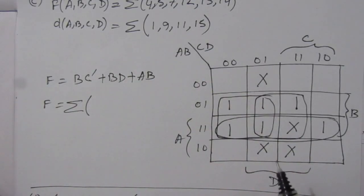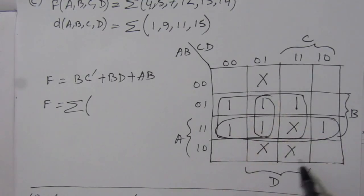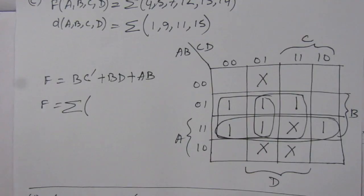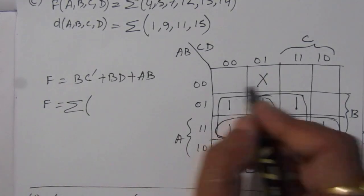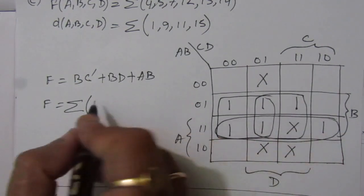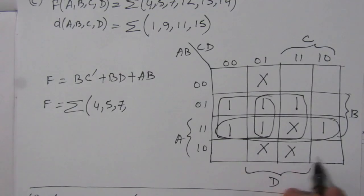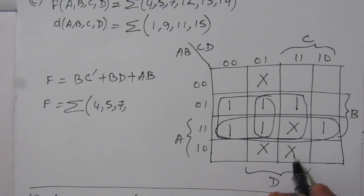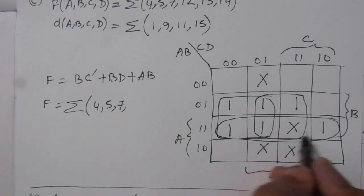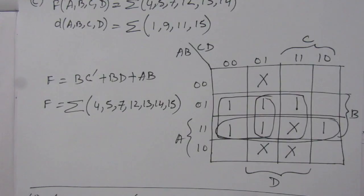Now we have to express it in sum of minterms. We have to neglect these don't care conditions because they are not present in any other combination. We will write 4, 5, 7, then 8, 9, 10, 11. We discard the two don't cares 9 and 11 because they are not combined in any other terms. Then we have 12, 13, 14, and 15. So this is the sum of minterms expression.